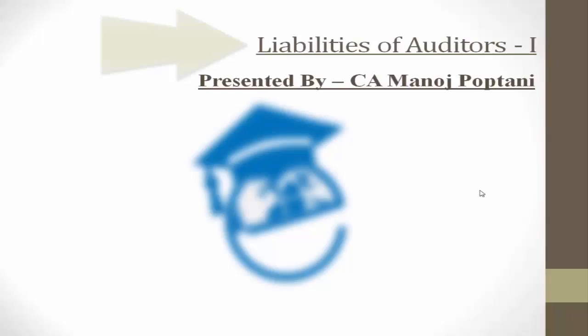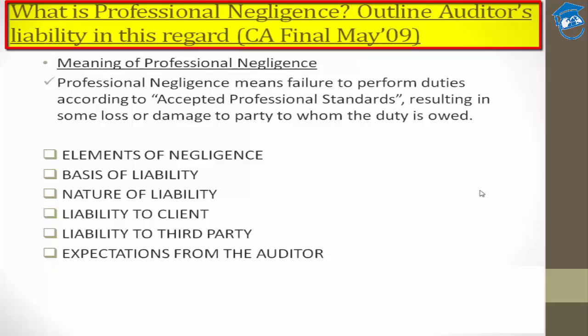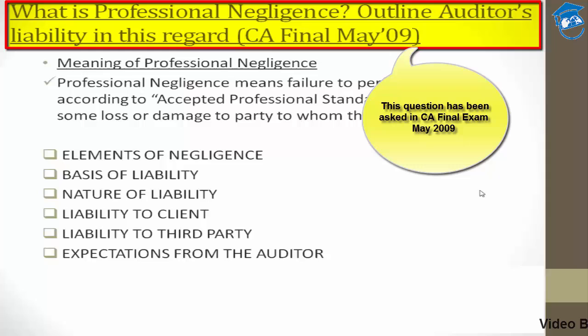Today's question from our CBLs: we are about to take off with the first topic — what is professional negligence and outline the auditor's liability in this regard. This question has been asked in one of the CA Final examination past papers, specifically the CA Final attempt for May 2009.